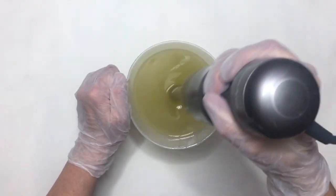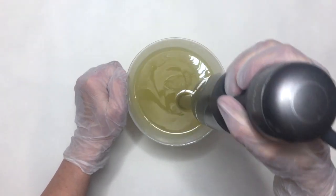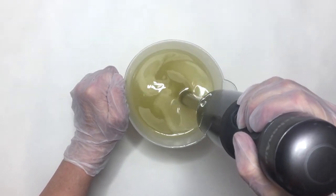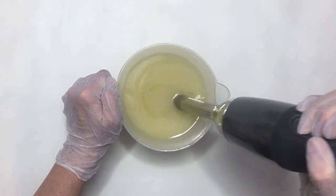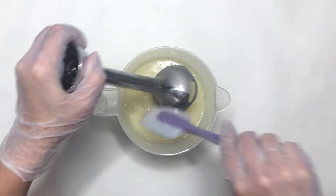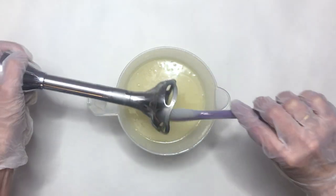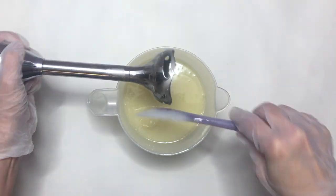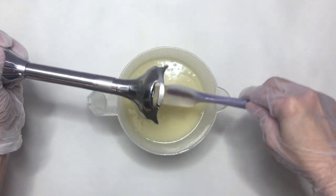Now I'll stick blend until it reaches a light trace. I use the small spoonula to clean off my stick blender. This is my favorite soapy tool of all time. It's perfect for small batches and for mixing small amounts of colorants.